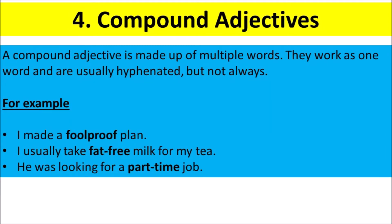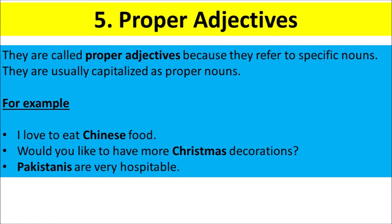Compound Adjectives. A compound adjective is made up of multiple words. They work as one word and are usually hyphenated, but not always. For example, I made a foolproof plan. I usually take fat-free milk for my tea. He was looking for a part-time job.